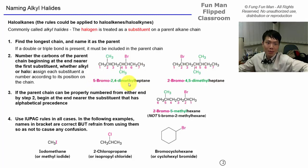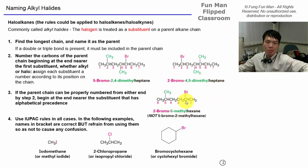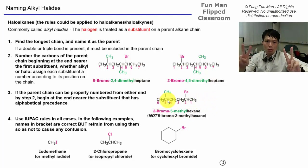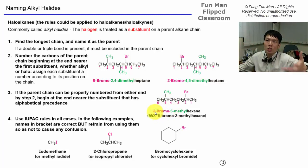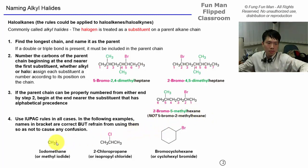For the next molecule, we also come from the left because the lowest number we get is 2, giving 2-bromo-4,5-dimethylheptene — B before M. For another example where both directions give a 2 and a 5, we apply the alphabetical order rule: B comes before M, so we assign the lower number to the substituent that comes first alphabetically. That gives 2-bromo-5-methylhexane, not the other way around.